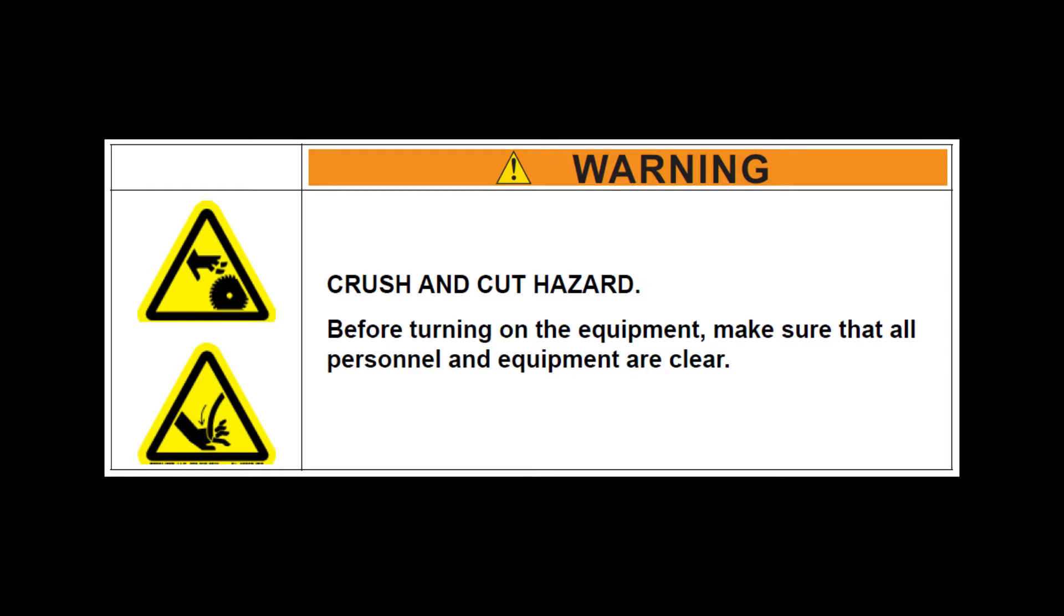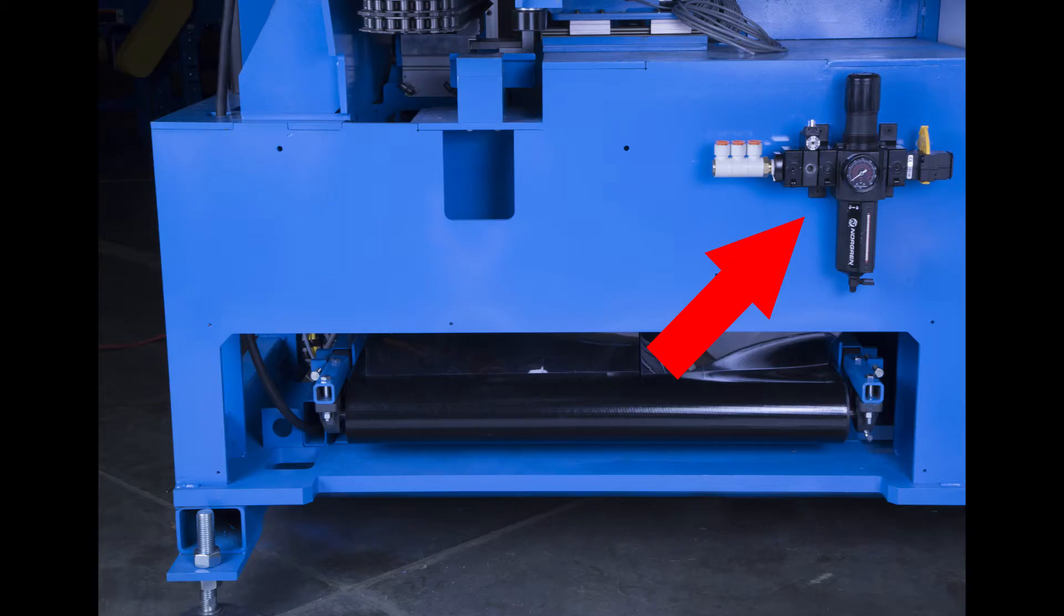Checking the air pressure: remove the lockout-tagout mechanisms for this step and power up the saw. The main regulator located on the side of the saw should read 110 PSI anytime it's on.